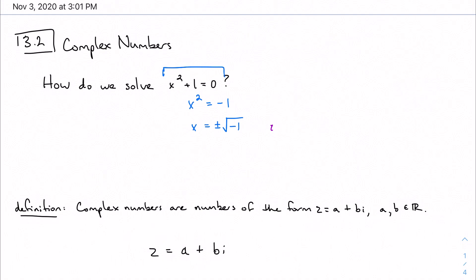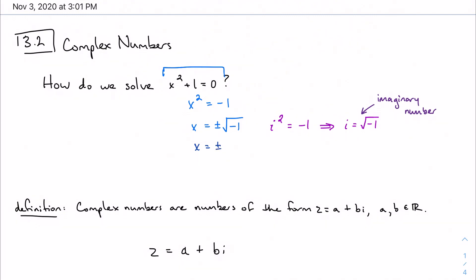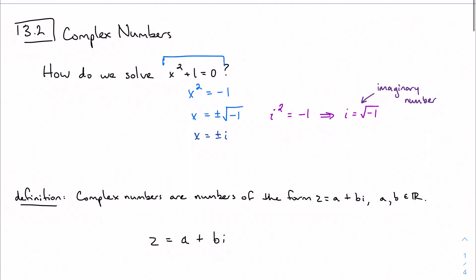Along the way they made it work and said, alright, we'll define i squared to be equal to negative 1, so that i represents the square root of negative 1. This is what we came to know as our imaginary number. That way we could finish the problem by calling this plus or minus i.